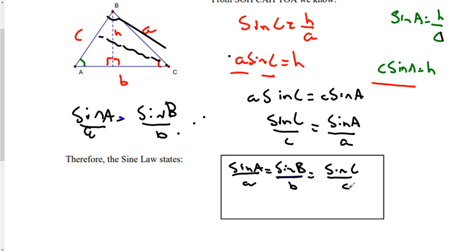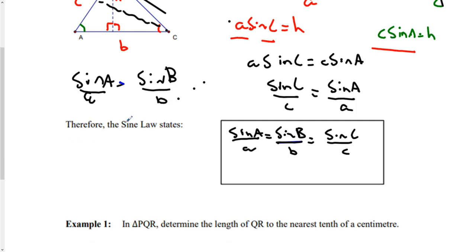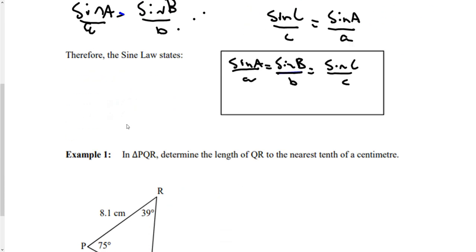For the Sine Law to work, you need any two angles and one opposite side, or you need an angle, its opposite side, and then another side — when you're looking for the opposite angle to that side. Let's look at an example here.